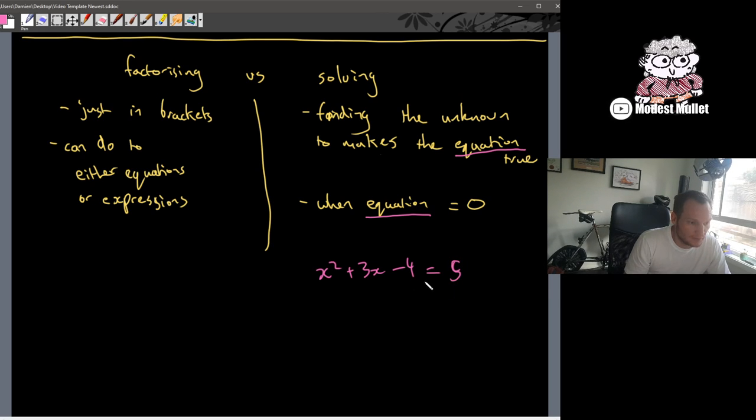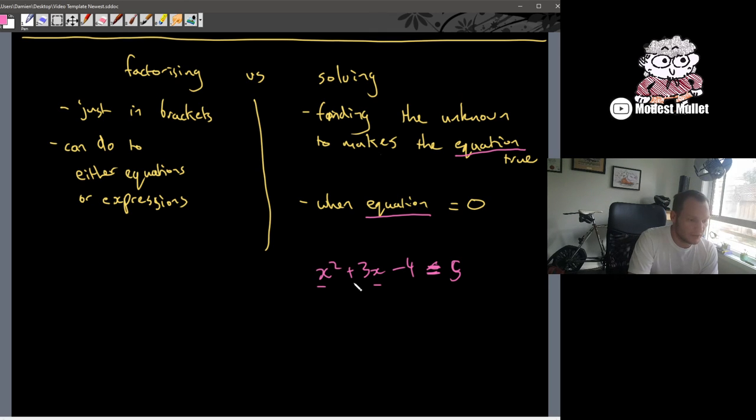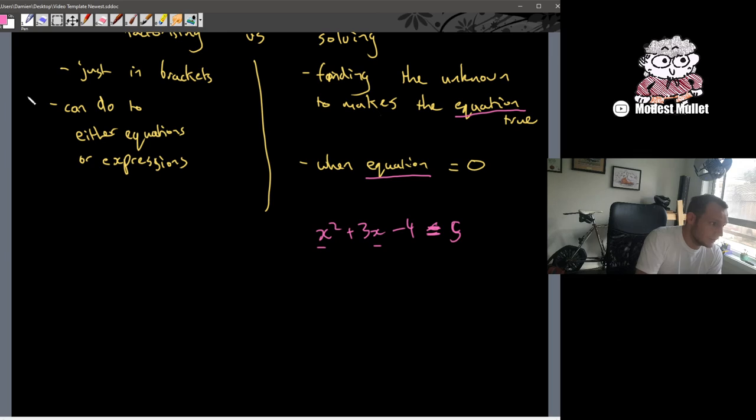To solve, you need to know it equals something. Once you have it equal to 5, you can now, because you have it equal to something, you know you're finding the values of x that make this whole equation true. So that's the big difference. Factorizing is you can factorize something that has an equal sign in it. That's completely fine. That's just writing as brackets. But then we use that factorizing generally to solve quadratics using the very last thing, which is the null factor law.